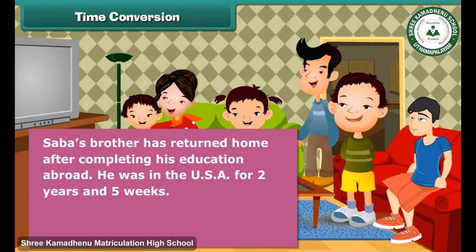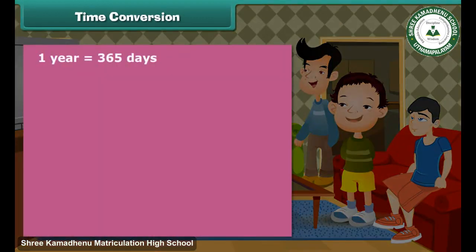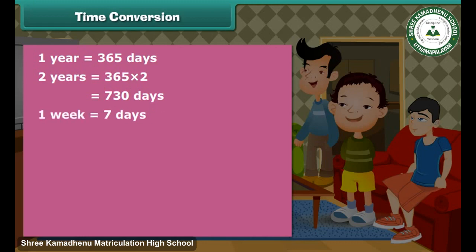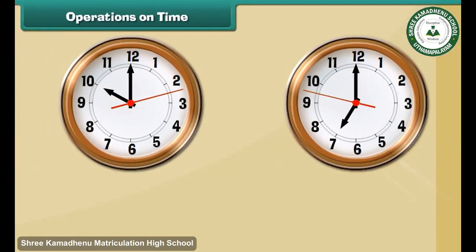Sabah's brother has returned home after completing his education abroad. He was in the USA for 2 years and 5 weeks. Express his stay in the USA in days. 1 year equals 365 days. 2 years equals 365 × 2, which equals 730 days. 1 week equals 7 days. 5 weeks equals 7 × 5, which equals 35 days. 2 years and 5 weeks equals 730 plus 35 days.